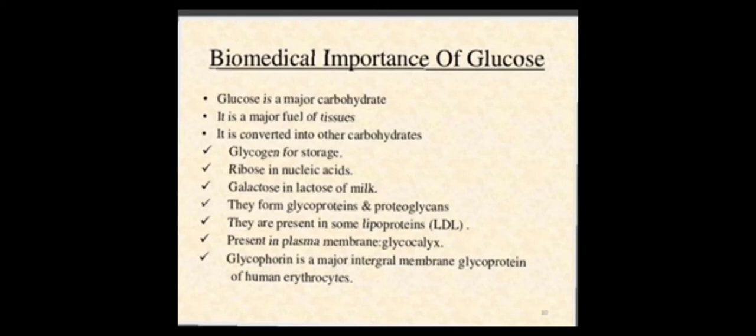Glucose forms nucleic acid ribose and milk lactose. It forms glycoproteins and proteoglycans. They are present in some lipoproteins like LDL and in the plasma membrane. Glycophorin is a major integral membrane glycoprotein of human erythrocytes.